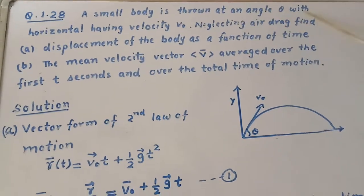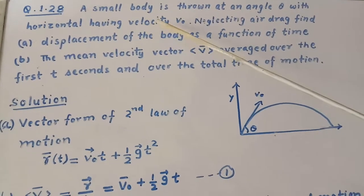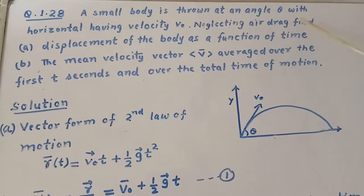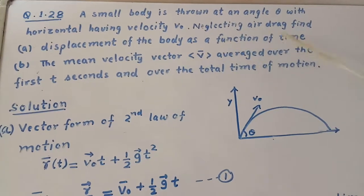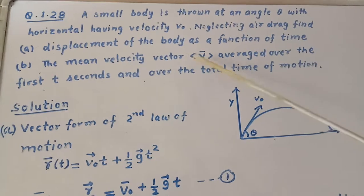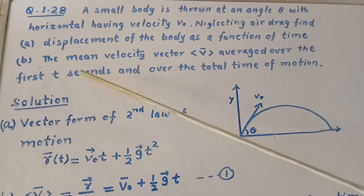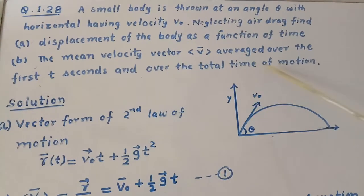A small body is thrown at an angle theta with horizontal having velocity V0. Neglecting air drag, find displacement of the body as a function of time, and the mean velocity vector averaged over the first T seconds and over the total time of motion.